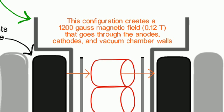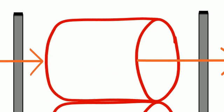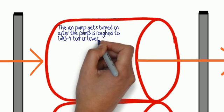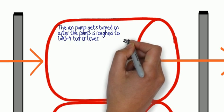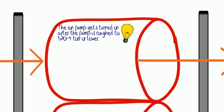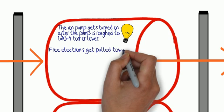There it is. Zooming up on that, we're going to actually rough this pump down to 10 to the minus 4 torr or lower if we can, and go ahead and turn it on. 7,000 volts is what we typically use, but the ion pump will operate anywhere between 3 and 7,000.